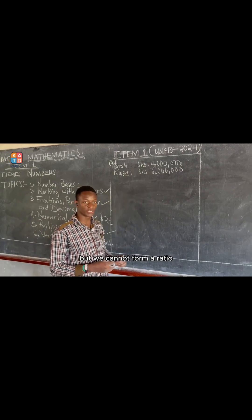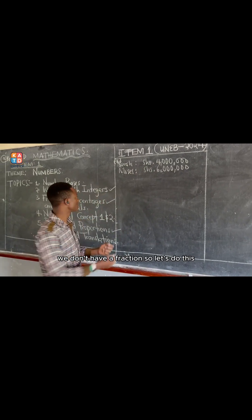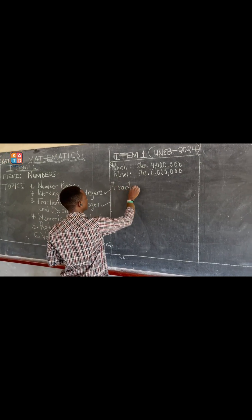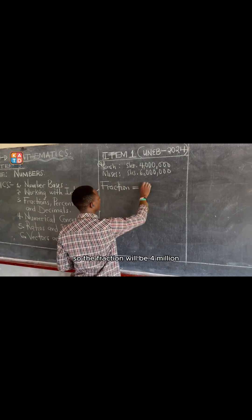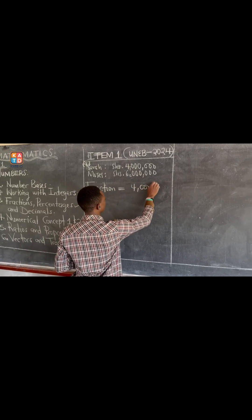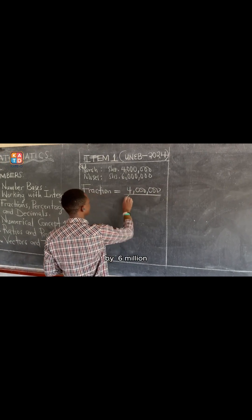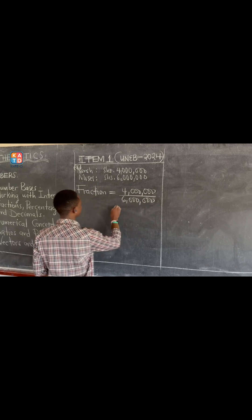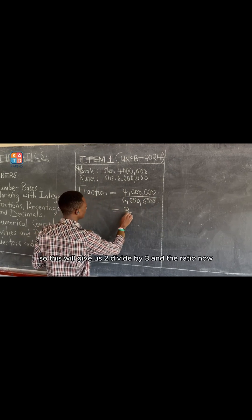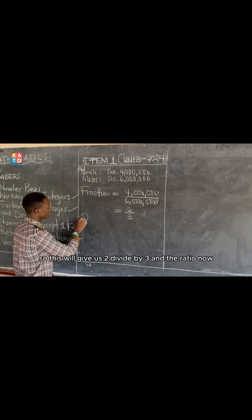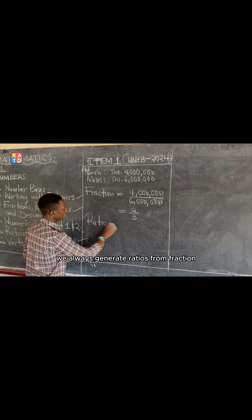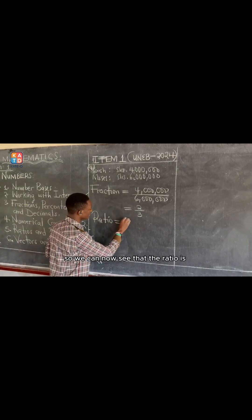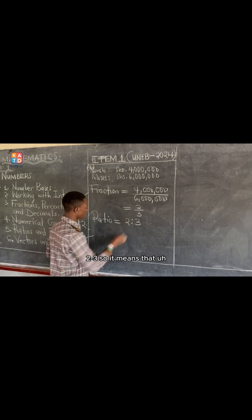Basically, you cannot form a ratio when you don't have a fraction. So, we can now get a fraction. The fraction will be 4 million divided by 6 million. This will give us 2 divided by 3. And the ratio now — Gloria is generating ratios from fractions — so we can now see that the ratio is 2 to 3.